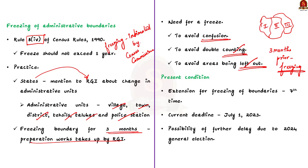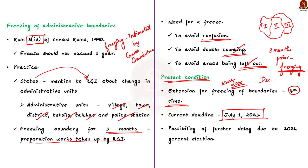Recently, the government extended the deadline for freezing and announced July 1, 2023 as the new deadline. Since 2020, this is the seventh time the deadline has been extended. Earlier deadlines were December 31, 2022 and before that June 30, 2022. With the 2024 general election approaching, the author feels the census will be delayed further, and highlights issues associated with delaying the census exercise.